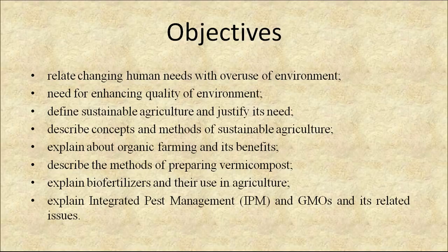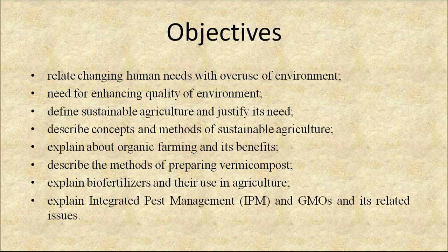Now come to the objectives of the program. First, relate changing human needs with overuse of environment. Second, need for enhancing quality of environment. Third, define sustainable agriculture and justify its need. Fourth, describe concept and methods of sustainable agriculture. Fifth, explain about organic farming and its benefits. Sixth, describe the methods of preparing vermicompost. Seventh, explain bio-fertilizers and their use in agriculture. Eighth, explain integrated pest management and GMOs and their related issues.